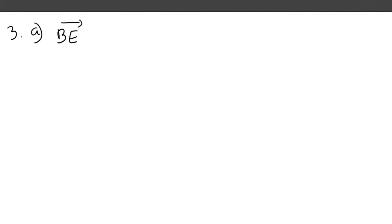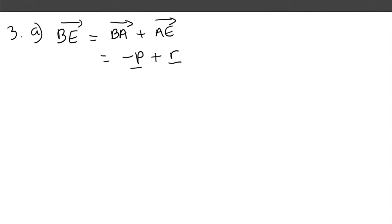Question 3a: express vector BE in terms of p and r. To get from B to E, we use vector paths. We go from B to A, which is against the arrow so it's -p, and then from A to E, which is r. So BE = -p + r, or equivalently r - p. It's sometimes nicer to write it with the negative not first, but either way is fine.